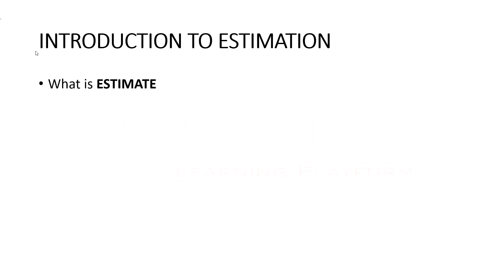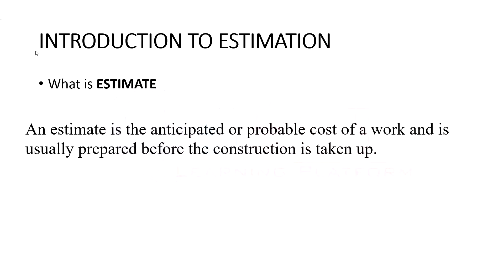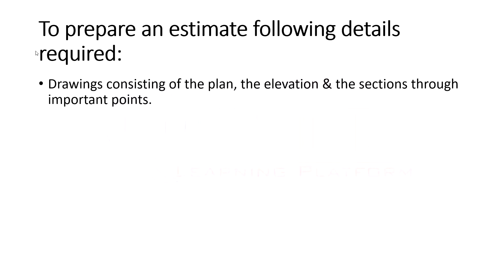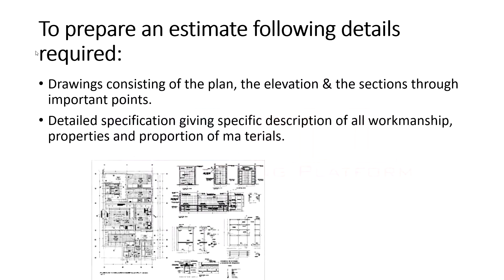First, what is an estimate? An estimate is the anticipated or probable cost of work. It is usually prepared before construction is taken up. To prepare an estimate, the following details are required: drawings consisting of a plan, elevation, section, and important points; and detail specifications giving a specific description of all workmanship, properties, and proportions of materials.